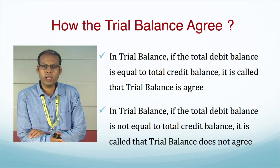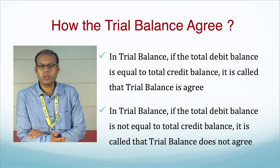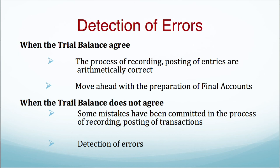If the trial balance agrees, we can go for the preparation of final accounts. If the trial balance does not agree, we have to move backward and check why. When the trial balance agrees, it means the arithmetical accuracy of the recording, posting, and balancing of the ledgers. When the trial balance does not agree, we have to detect the errors committed — either in recording transactions in the journal, posting from journal to ledgers, balancing the ledgers, or in some other part.